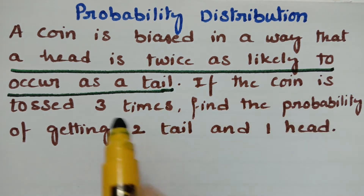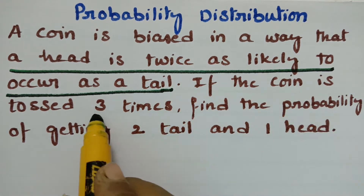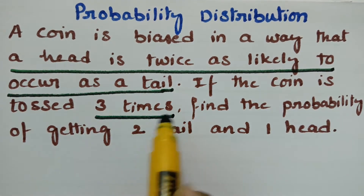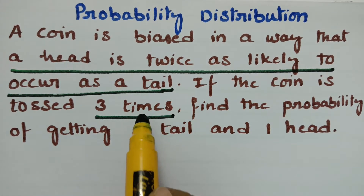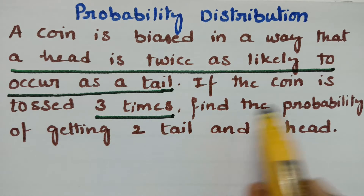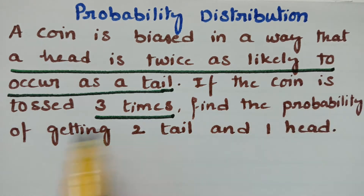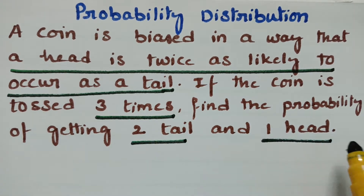If a coin is tossed three times, so n is given as three. We need to find the probability of getting two tails and one head.